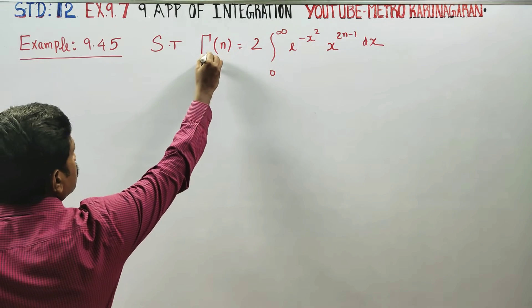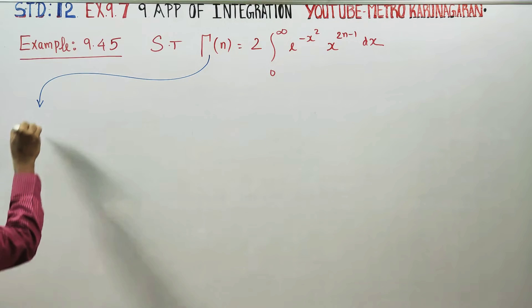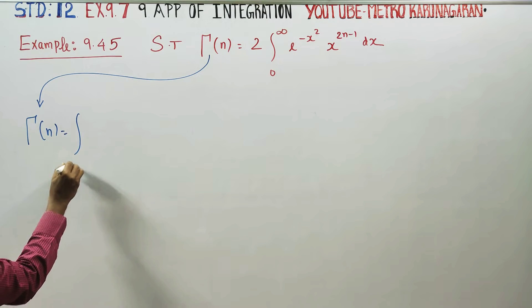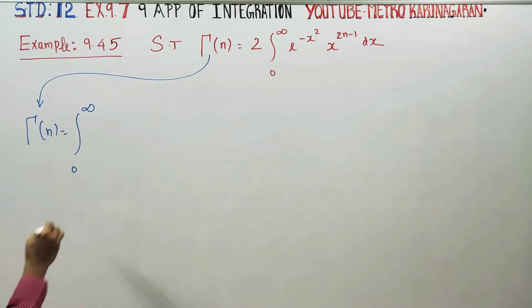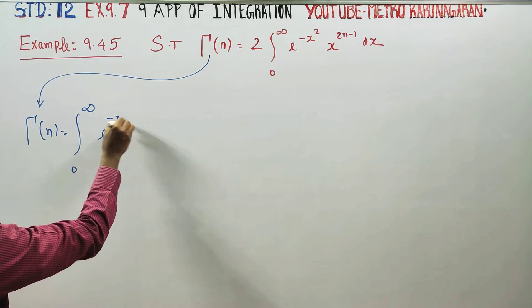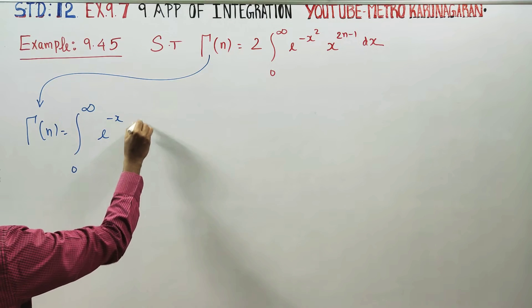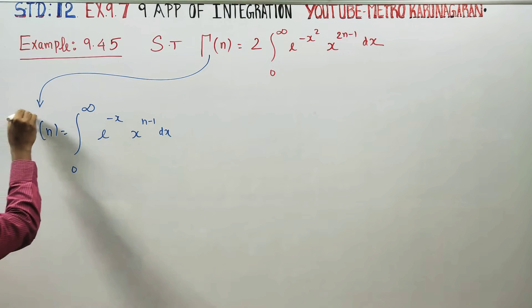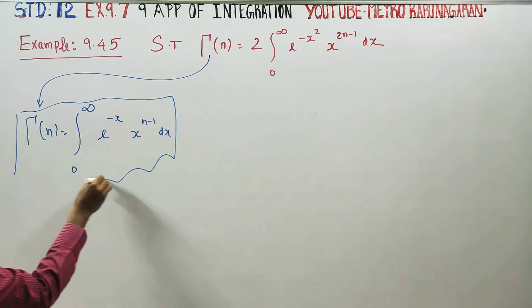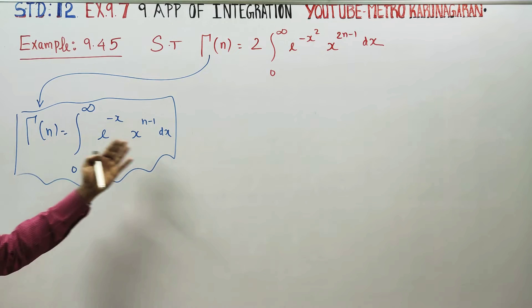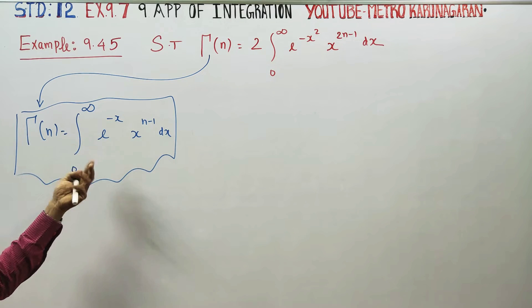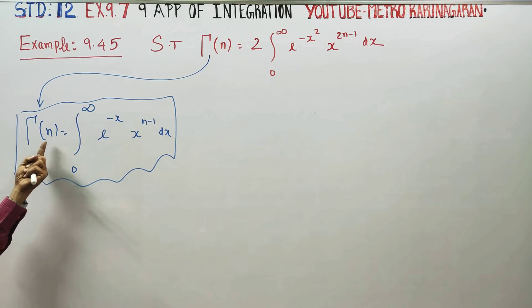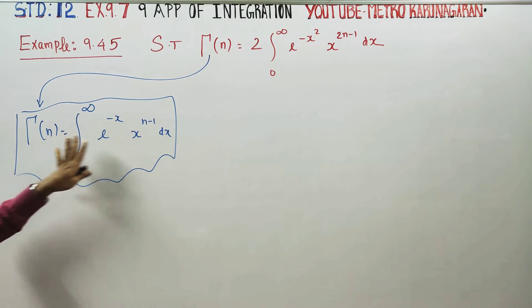What is gamma n? Gamma n — the gamma integral of n. This formula is the integral from 0 to infinity of e to the power minus x, times x to the power n minus 1, dx. This is the gamma integral of n. This is the formula. If you look at this integral symbol, this is actually the gamma integral — gamma integral of n.